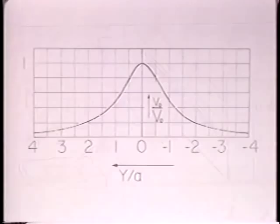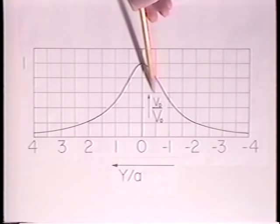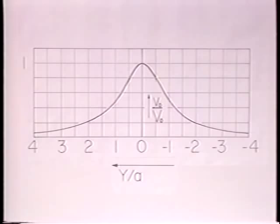This is the predicted distribution of normalized probe signal with normalized probe position. The signal is largest directly under the conductor, trailing off to zero as the probe is pulled away.